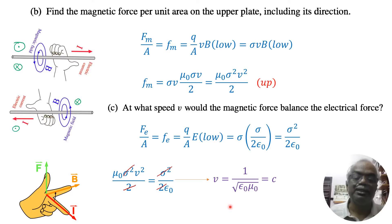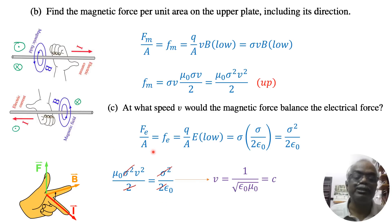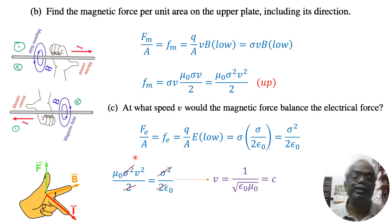So that is about Part C — at what speed would the magnetic force balance the electric force. It would only balance when moving at the velocity of light, which is very difficult. Thank you very much for watching and supporting me.